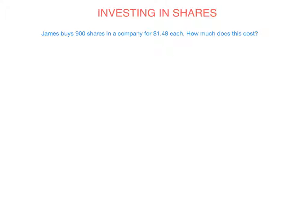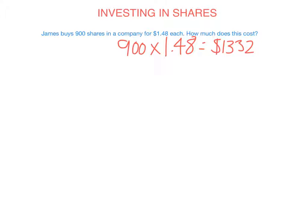The maths behind this is very simple. All we need to do is multiply 900 shares times $1.48 each, which equals $1,332. So James owns 900 shares in the company and is a part owner, having paid $1,332 for the shares.